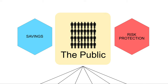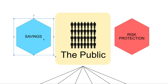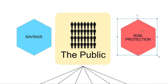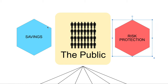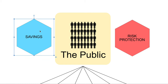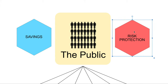Essentially we have two big demands. We have a demand for savings — setting aside some money today for a future expense, whether it be your child's education, buying a new car, buying a house, even going on holiday. And risk protection is anything from insuring your car to insuring your life in case you die and someone has to take care of your kids.